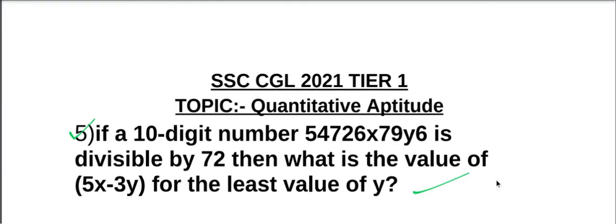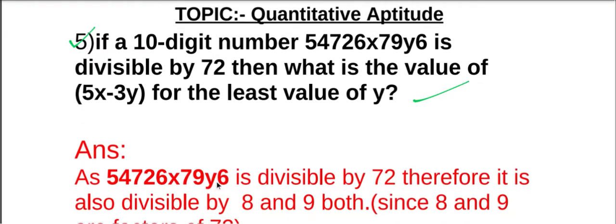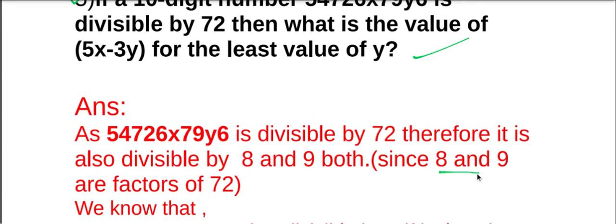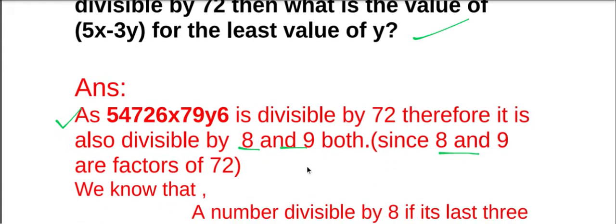So let us find the answer. Here the given number is divisible by 72. Therefore, it is also divisible by 8 and 9. As we know 8 and 9 both are the factors of 72. And we know that if a number is divisible by 72, then the number is also divisible by its factors. So since 8 and 9 are both factors of 72, the given number is divisible by 8 and 9 both.